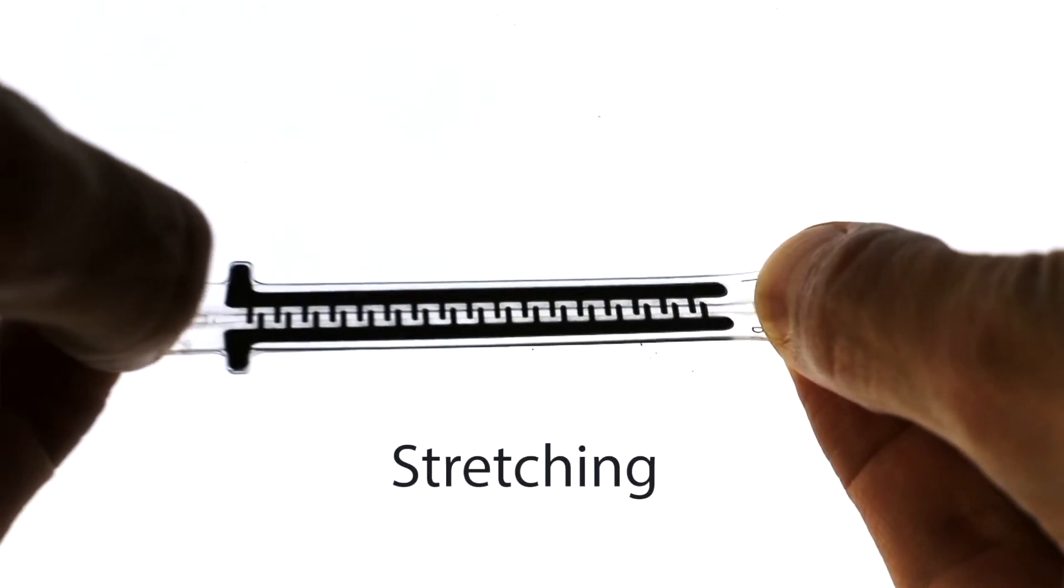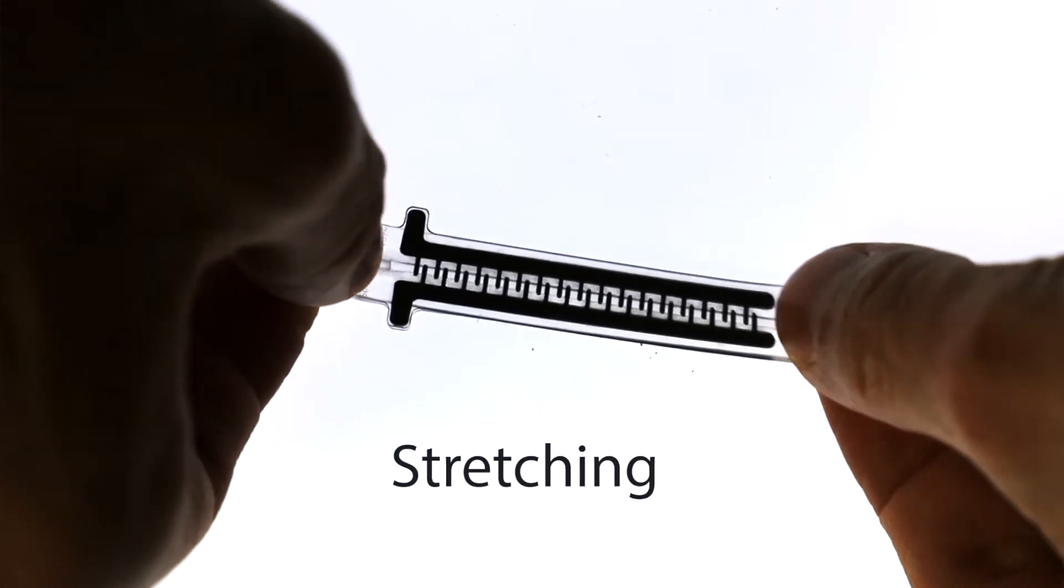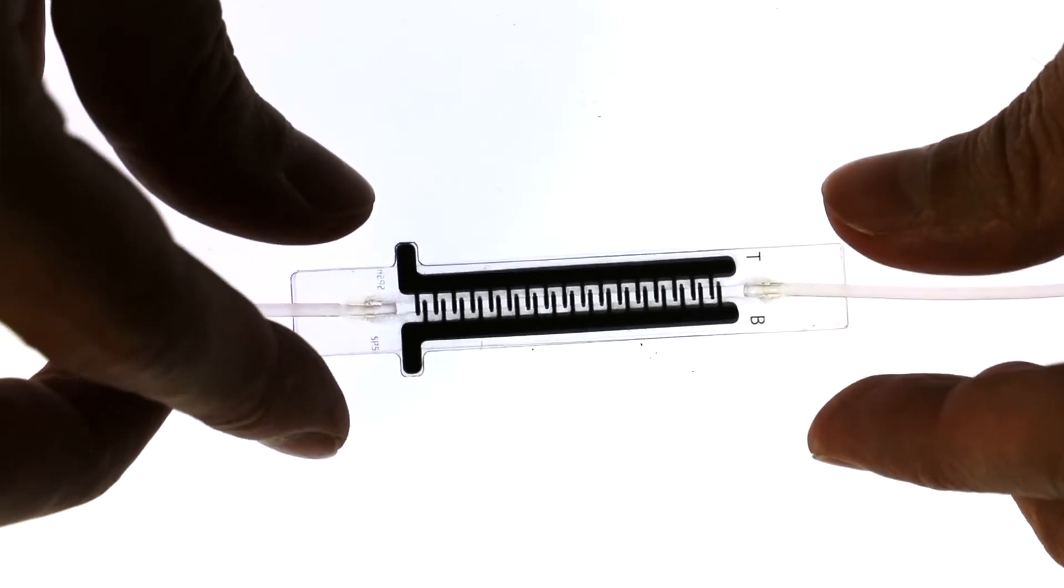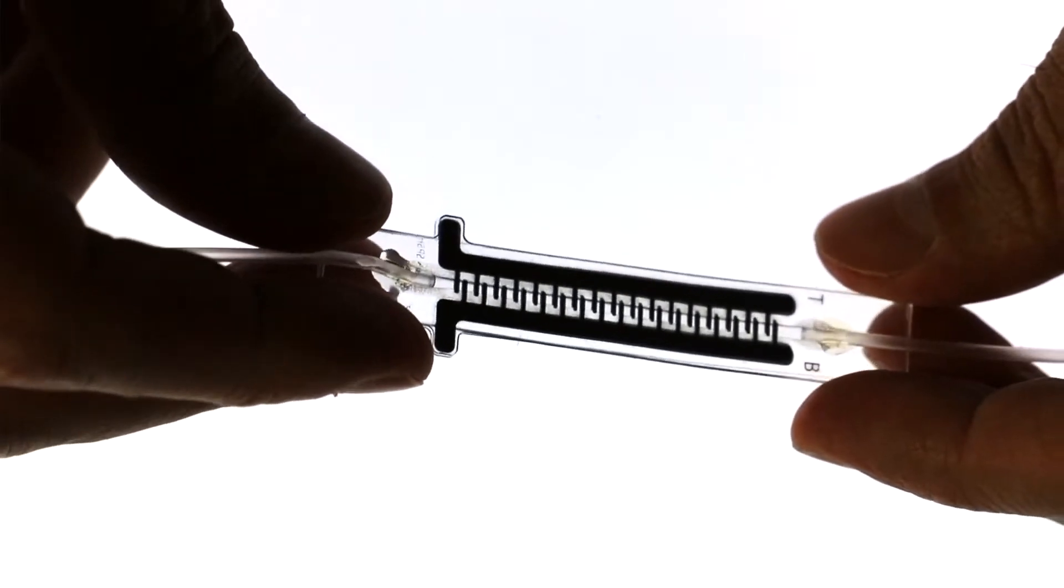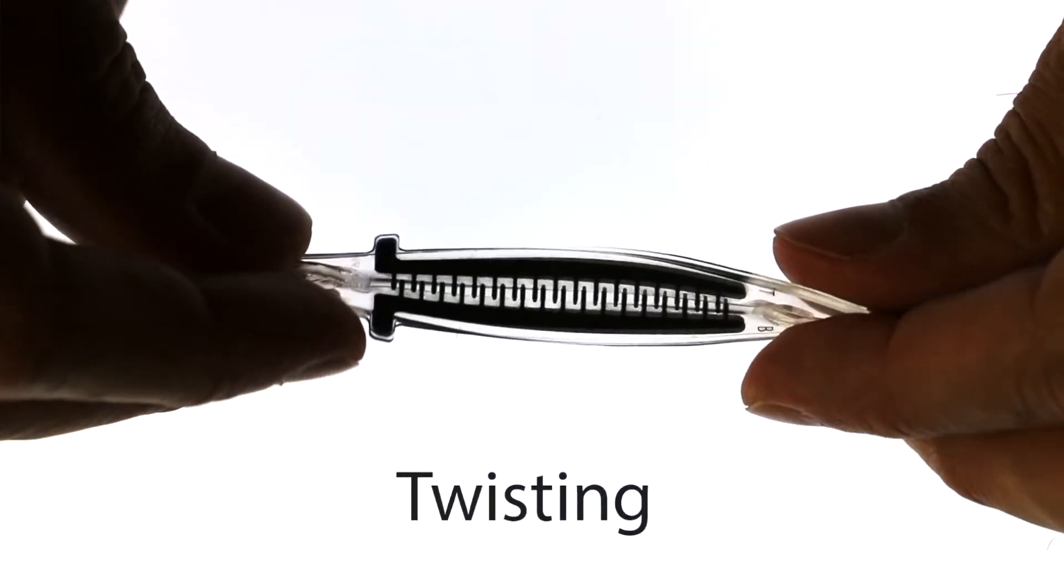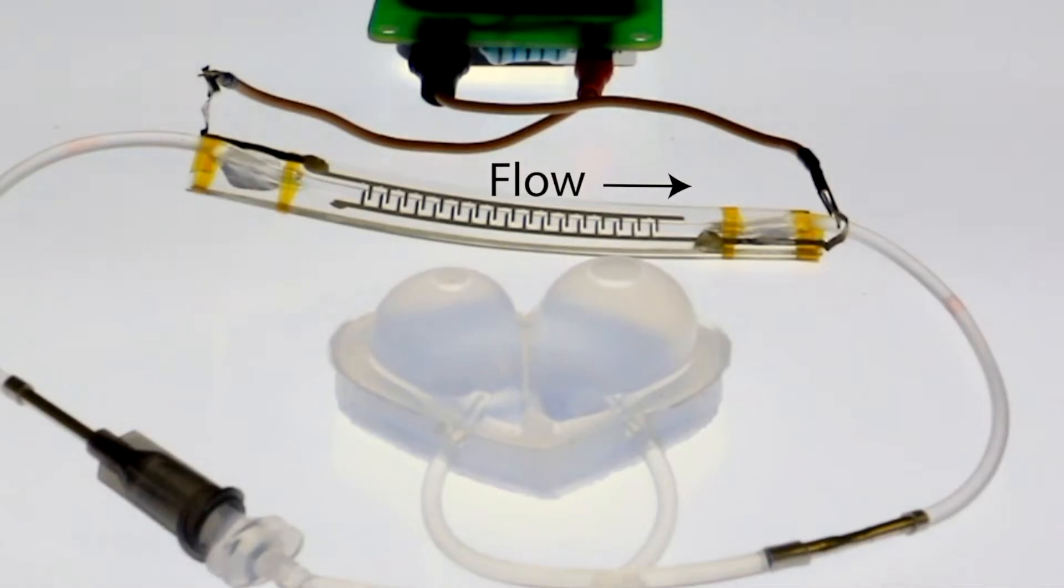Our stretchable pump represents a paradigm shift in how we create soft robots. We can integrate the pump directly into the soft artificial muscles of the robots, essentially creating an artificial heart for soft robotics.